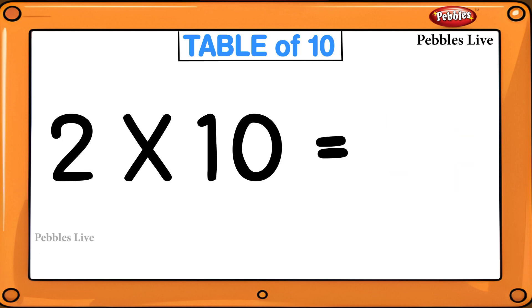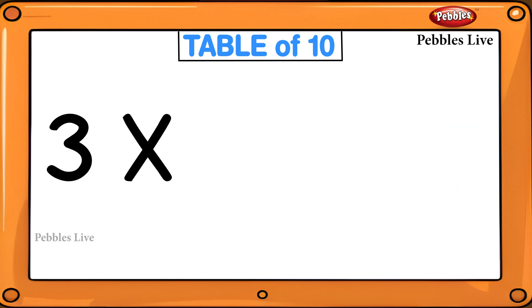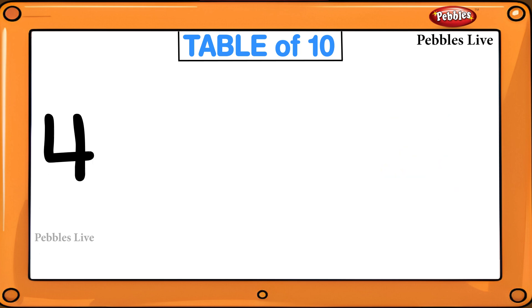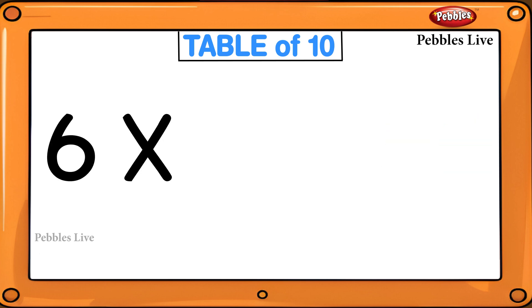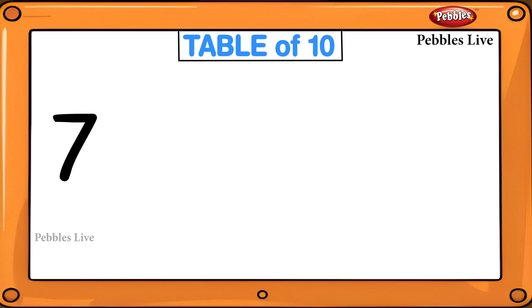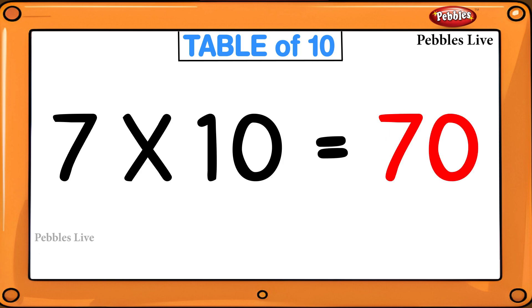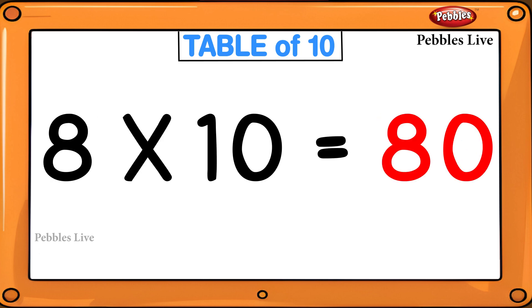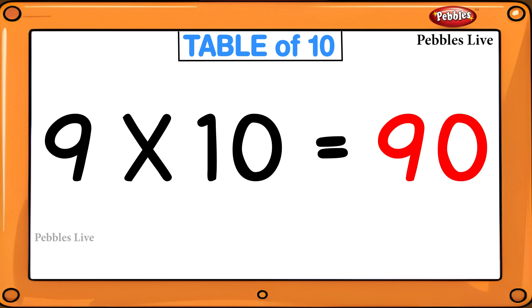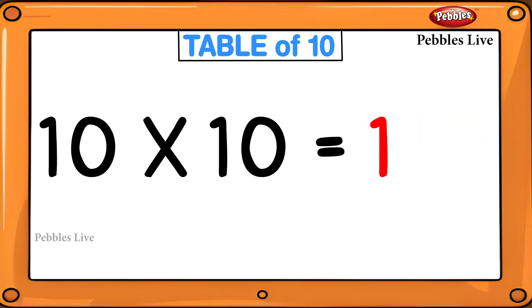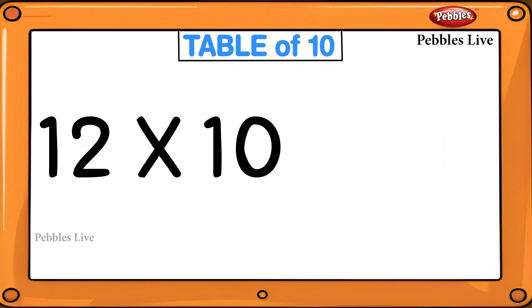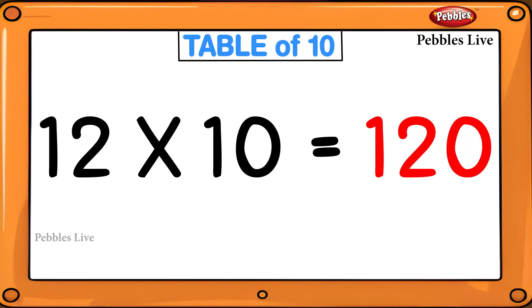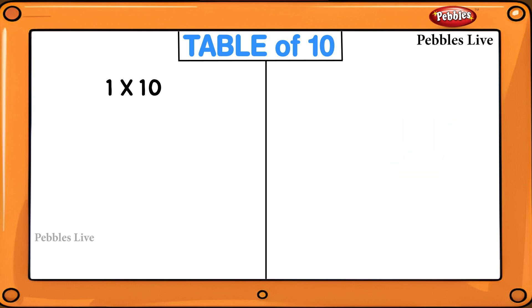2 tens are 20, 3 tens are 30, 4 tens are 40, 5 tens are 50, 6 tens are 60, 7 tens are 70, 8 tens are 80, 9 tens are 90, 10 tens are 100, 11 tens are 110, 12 tens are 120.